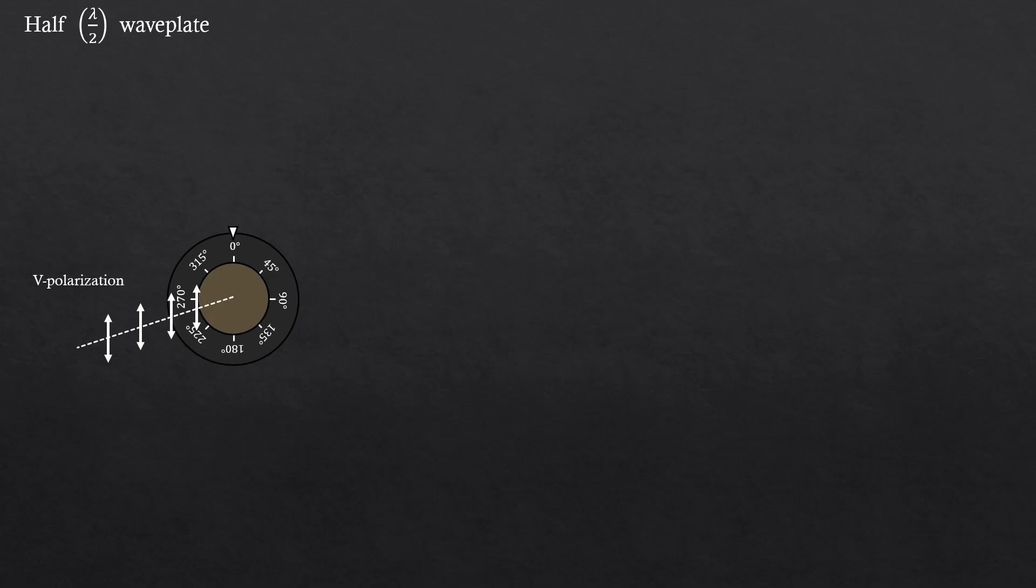Alright, let's see how wave plate changes the polarization of light. I'm just going to show it with a vertically polarized light. So starting with 0 degrees. It's just going to provide vertical polarization. So nothing has changed.